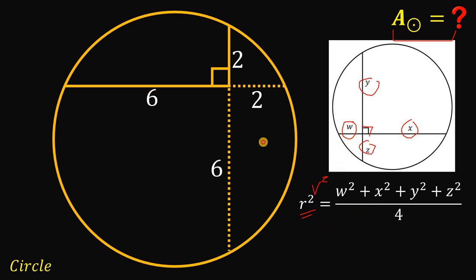Now, using this theorem to our given figure, we can say that r squared must be equal to 2 squared plus 6 squared plus 2 squared plus 6 squared.